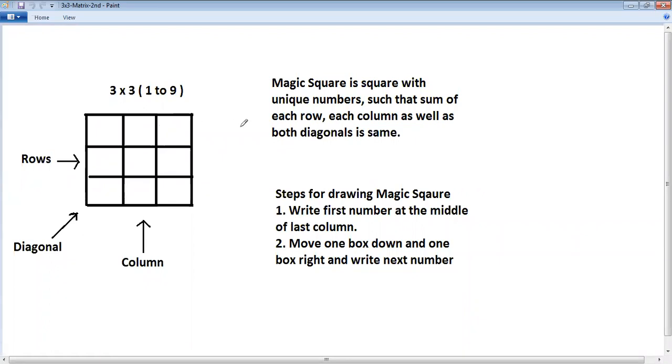Now to draw any magic square of odd numbers that is 3 by 3, 5 by 5, 7 by 7, we have just 2 simple steps. Step 1: Write first number at the middle of last column. Second step: Move one box down, one box right and write next number. This second step you have to go on repeating till you complete all the boxes. And while performing second step you have to learn 3 rules.